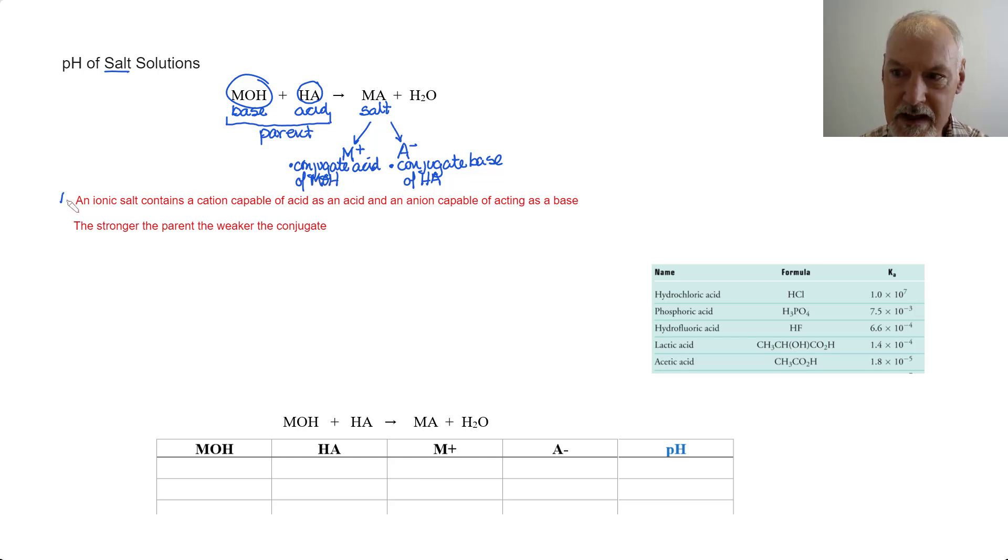And that's my first statement here: an ionic salt contains two parts. The positively charged cation is capable of donating a proton, either itself or by reacting with water, and the anion is capable of acting as a base. It can accept a proton or somehow react with water and therefore be able to accept a proton. The second point I want to mention is the stronger the parent, the weaker its conjugate.